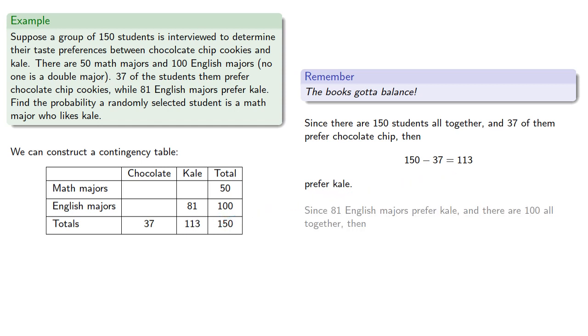Since 81 English majors prefer kale, and there are 100 altogether, then 100 minus 81, or 19, prefer chocolate chip.